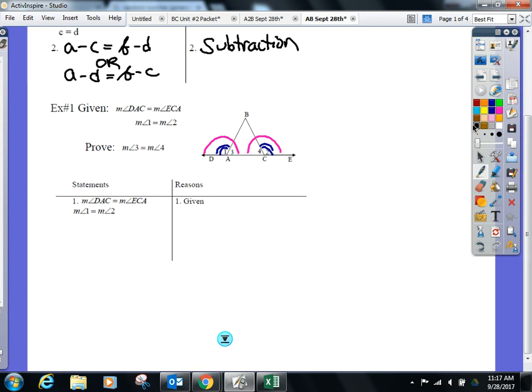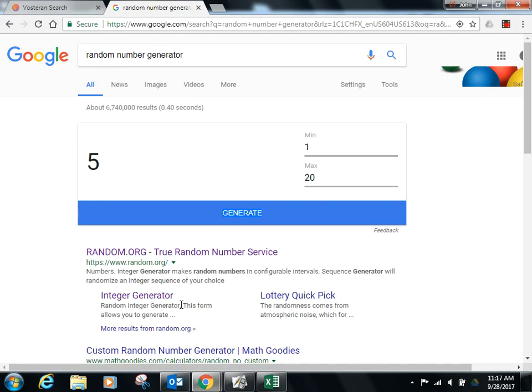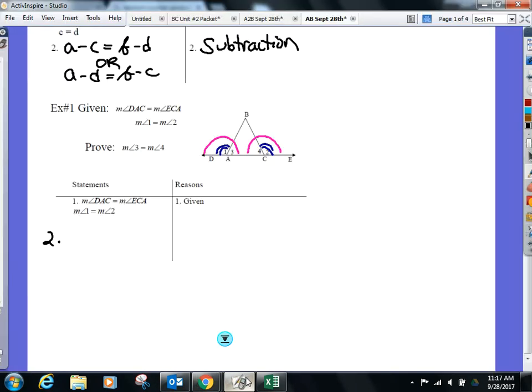Let's go. Tell me first what two angles you want to subtract from each other. Let me know what two angles you want to subtract from each other. Okay. I'll call it DAC. Is that what you said? Sorry, Meg. You're right. Yep. Angle DAC minus angle one is going to be the same as if I did what? ECA minus two. Perfect.